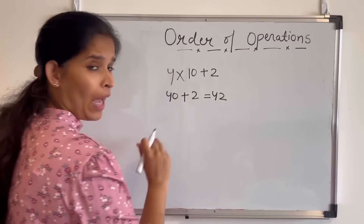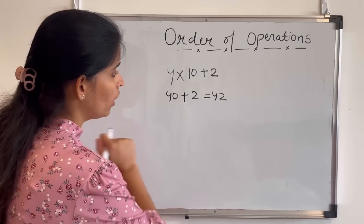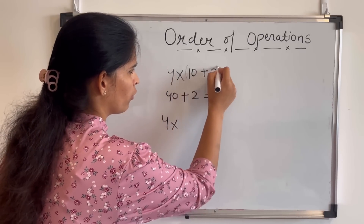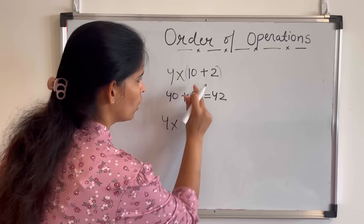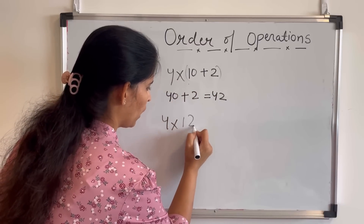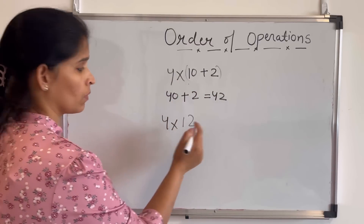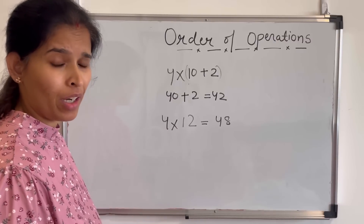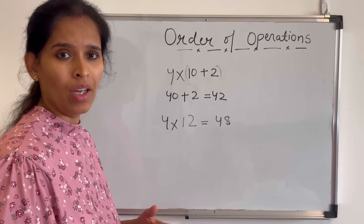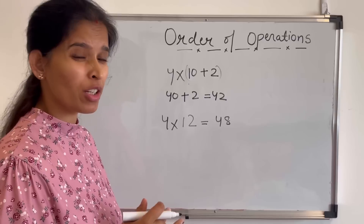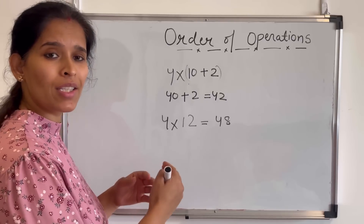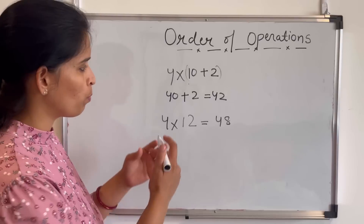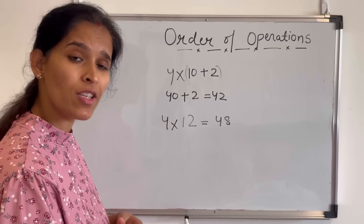If I solve this easily, it becomes 42 — I'm not using any kind of rule here. Now I want to solve it a different way: first I want to solve this part, and then 10 plus 2 is 12, 12 into 4 is 48. You can see that the solution is completely different. Now which one is right and which is wrong? It is very confusing.